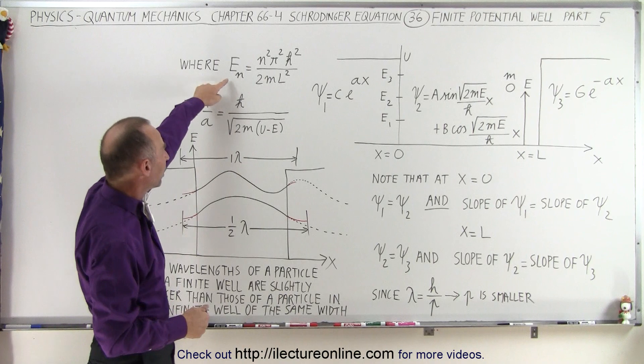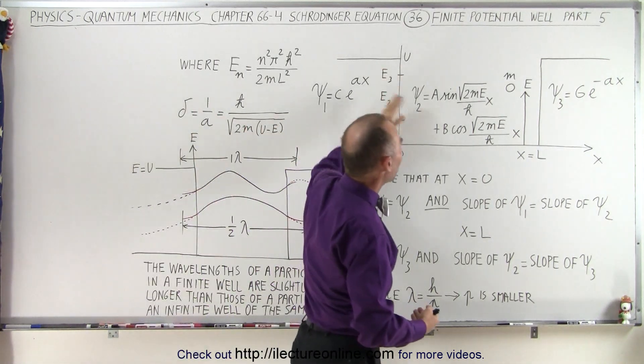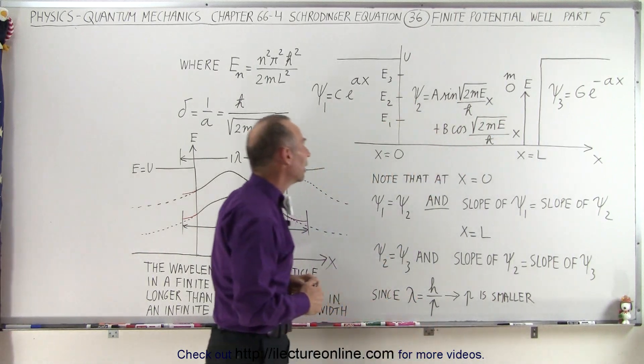So for example, we have E sub 1, E sub 2, E sub 3, which then provides a certain type of waveform for the particle within the well.